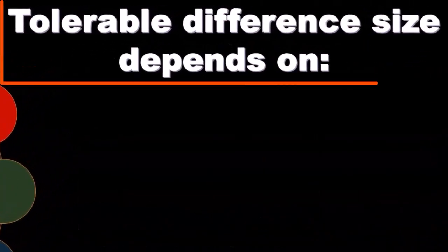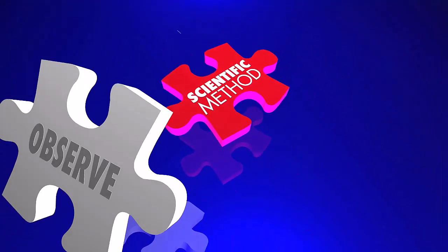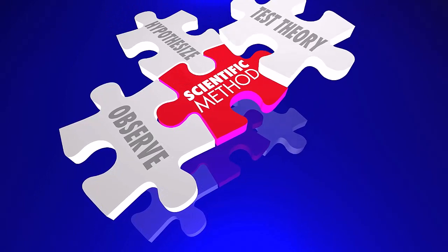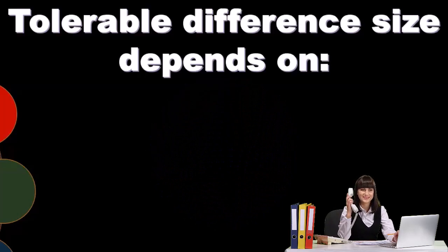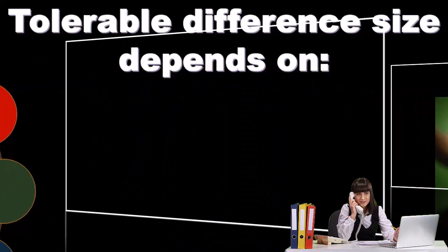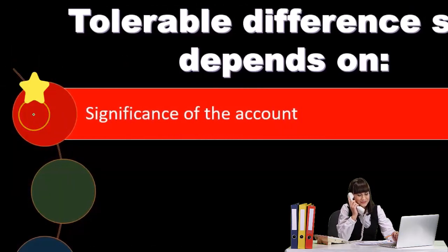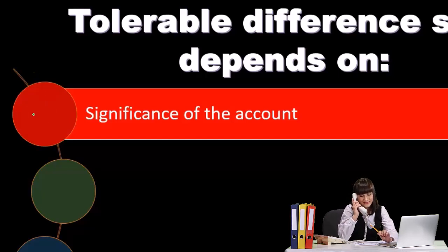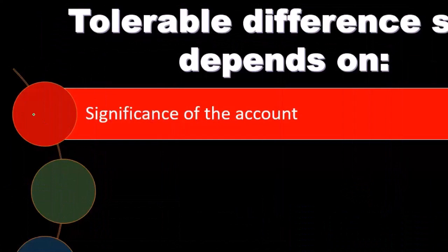Tolerable difference size depends on several things. You can see this procedure like a scientific type method — we have something similar to our hypothesis as our benchmark, our expectation. Then we perform the procedures and see how close they are to the expectation. The tolerable difference will depend on the significance of the account. If it's a very important account like cash, then we probably want a low difference when we do these types of analyses, always relating to materiality.